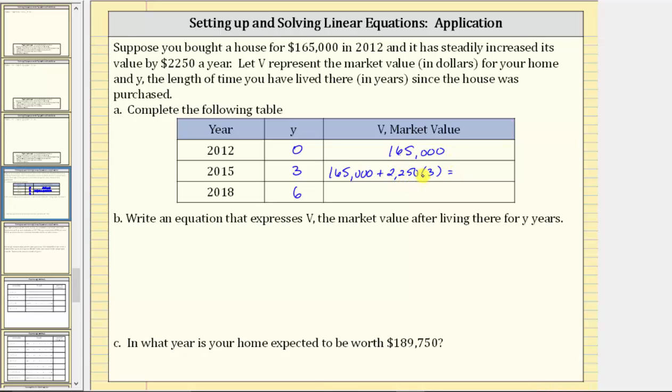Well $2,250 times three equals $6,750. $165,000 plus $6,750 equals $171,750, which is the value of the home in the year 2015.